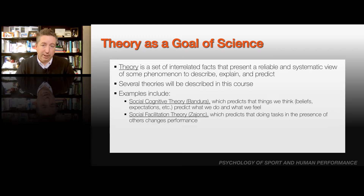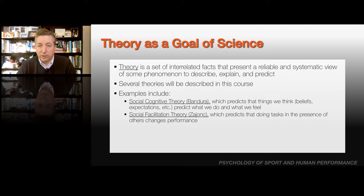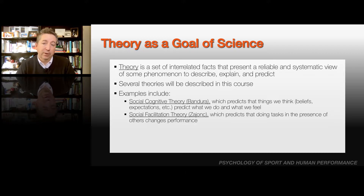There will be several theories we'll touch on throughout the course. One example is social cognitive theory, developed by Albert Bandura, a famous psychologist out of Stanford. Social cognitive theory simply predicts that the things that we think, the things we believe, the expectations that we may have, the guesses we make about the future, tend to predict what we feel and what we do. And that influences a lot of what we'll talk about in the course.